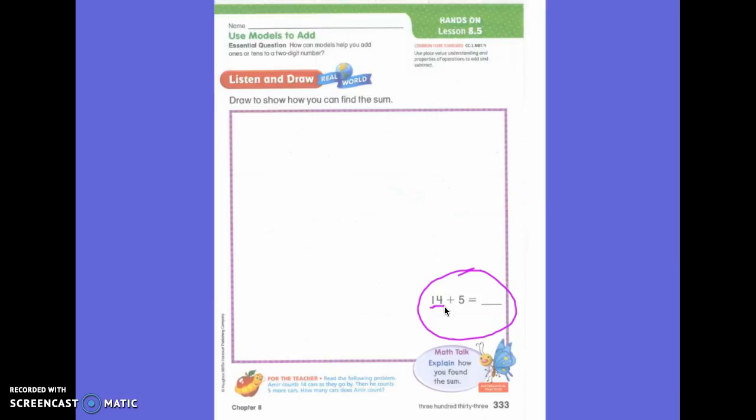We're going to make one line and four circles, you are exactly right. We're just going to do a quick draw. So now we've made 14. Now what are we going to do? Make five more circles. One, two, three, four, five.